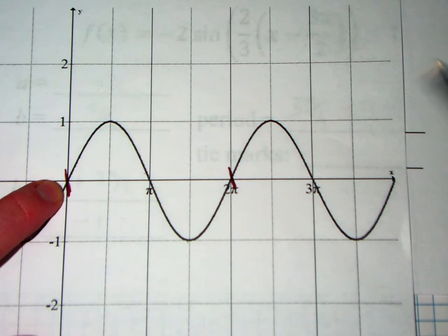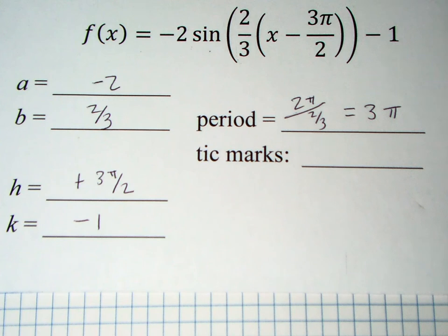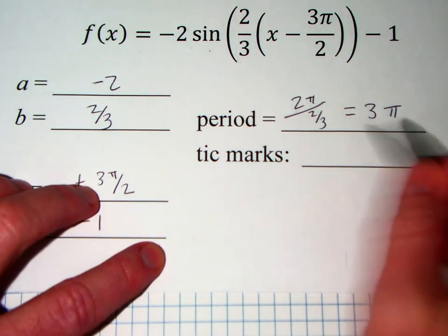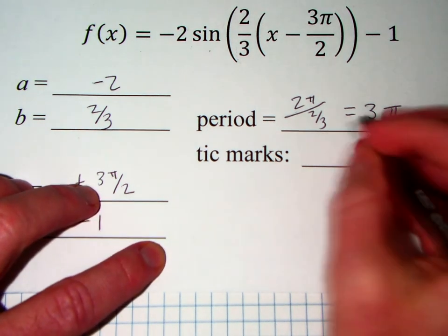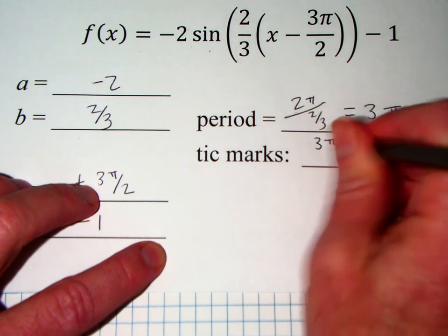If we can graph that, then we can just continue that pattern on for as long as we want to. So when we do our scale on the graph, I want to divide my period up into four sections. So whatever the period is, we're going to divide it by 4. In this case, it's 3 pi over 4.